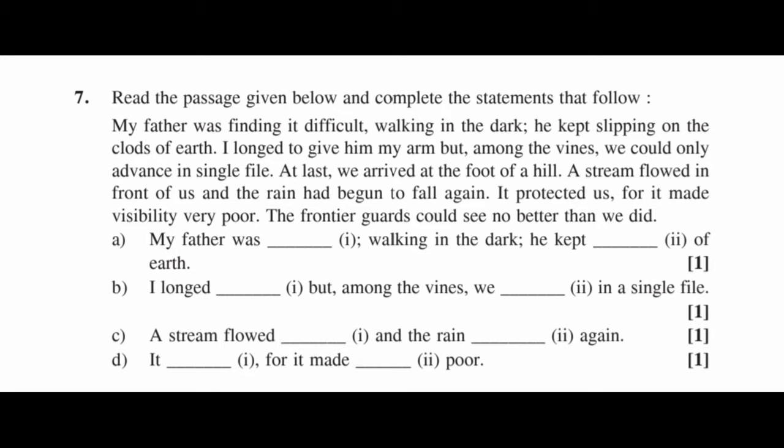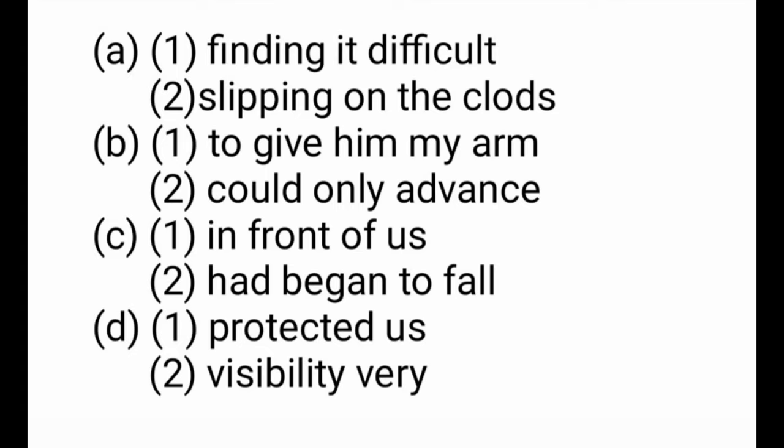Question 7: Read the passage given below and complete the statements that follow. Answer: 1. Finding it difficult — sleeping on the clothes. 2. To give him my arm — could only advance. 3. In front of us — had begun to fall. 4. Protected us — visibility very poor.